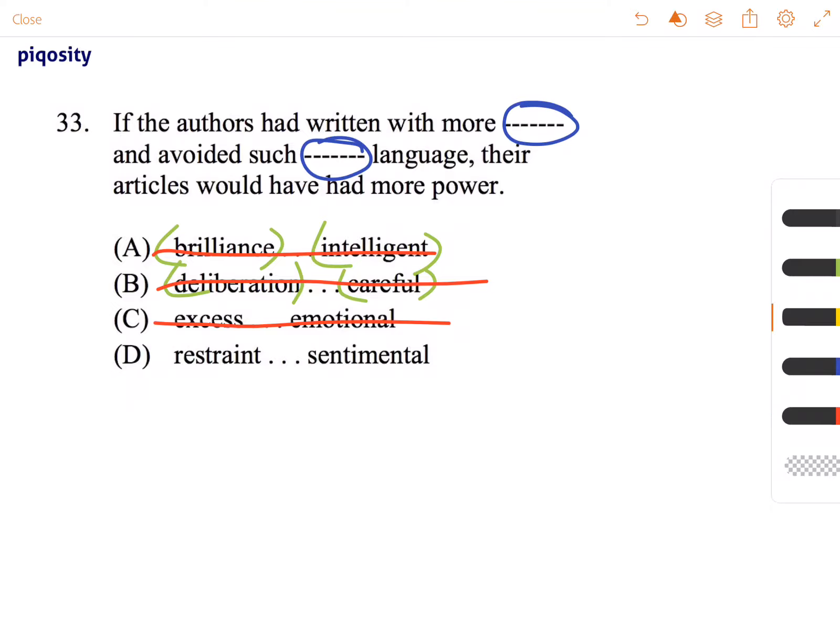So our only option left is answer choice D, restraint and sentimental. So if the authors had written with more restraint and avoided such sentimental language, their articles would have had more power. So answer choice D is the only thing that works.